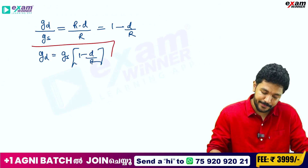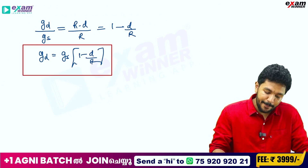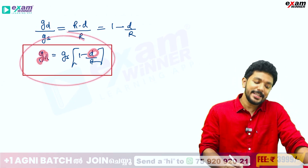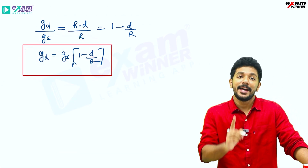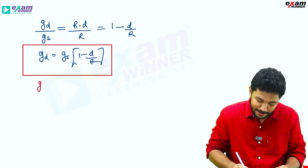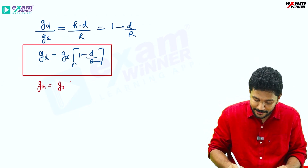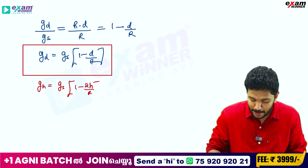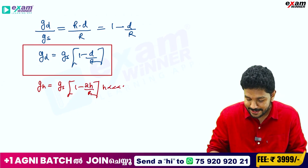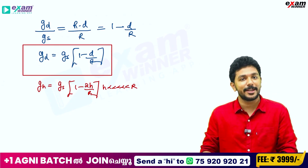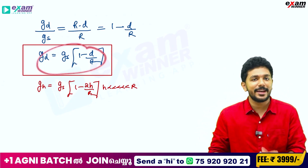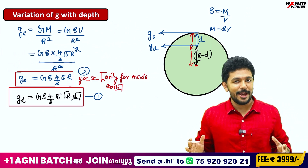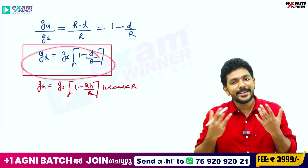So the final formula is: g at depth D equals Gs into (1 minus D by R). Compare this with the height formula: g at height H equals Gs into (1 minus 2H by R), which is only applicable when H is very very less than R. The depth formula, however, is valid for any depth without approximation.